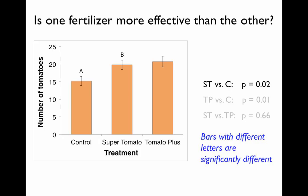That tells the reader there was a significant difference between those treatments. The number of tomatoes produced by plants fertilized with Tomato Plus was also different from the control — p of 0.01 — so we don't mark that bar with an A. But since p is greater than 0.05 for the comparison between the two fertilizer treatments, meaning they aren't significantly different, we label the Tomato Plus bar with a B as well. This way anyone can look at the graph without reading any other part of the results and know exactly what was found, including whether it was statistically significant.